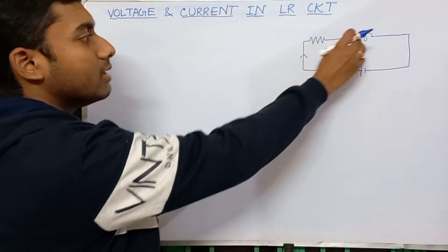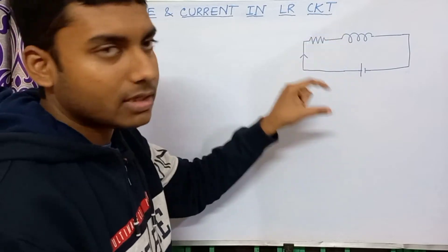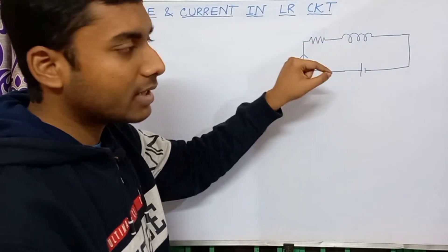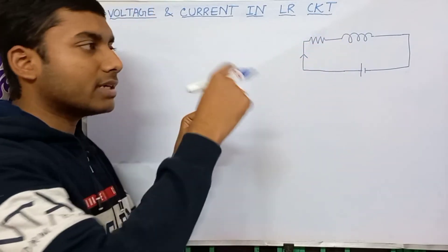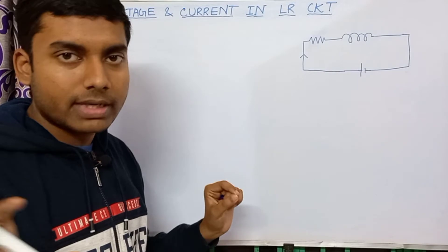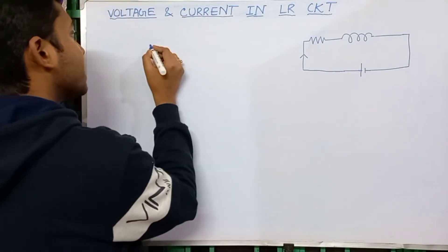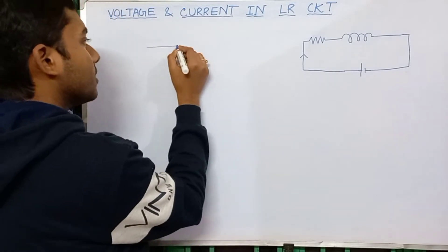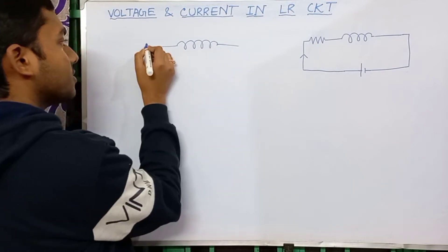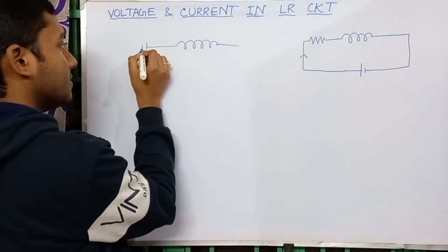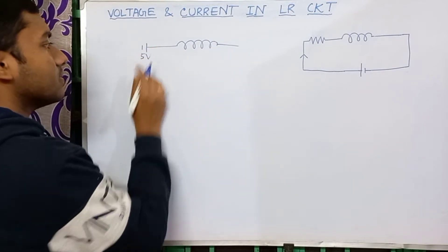So, in the LR circuit, L means inductor. Now what is an inductor? Inductor means coil. We have a circuit with an inductor. This is the battery, with plus and minus terminals. This is 5V.